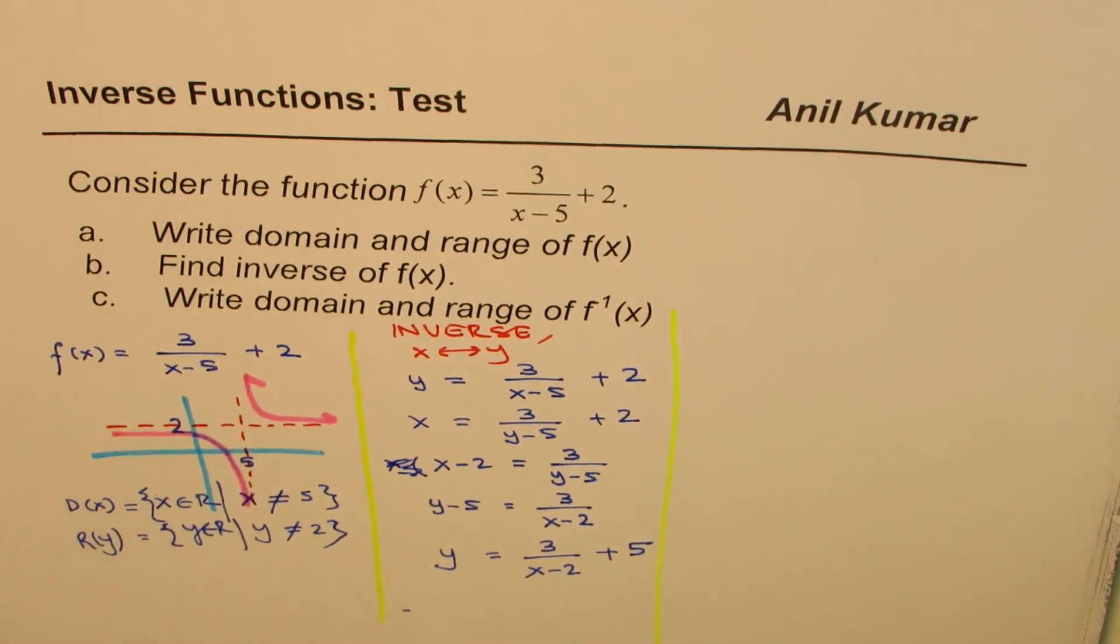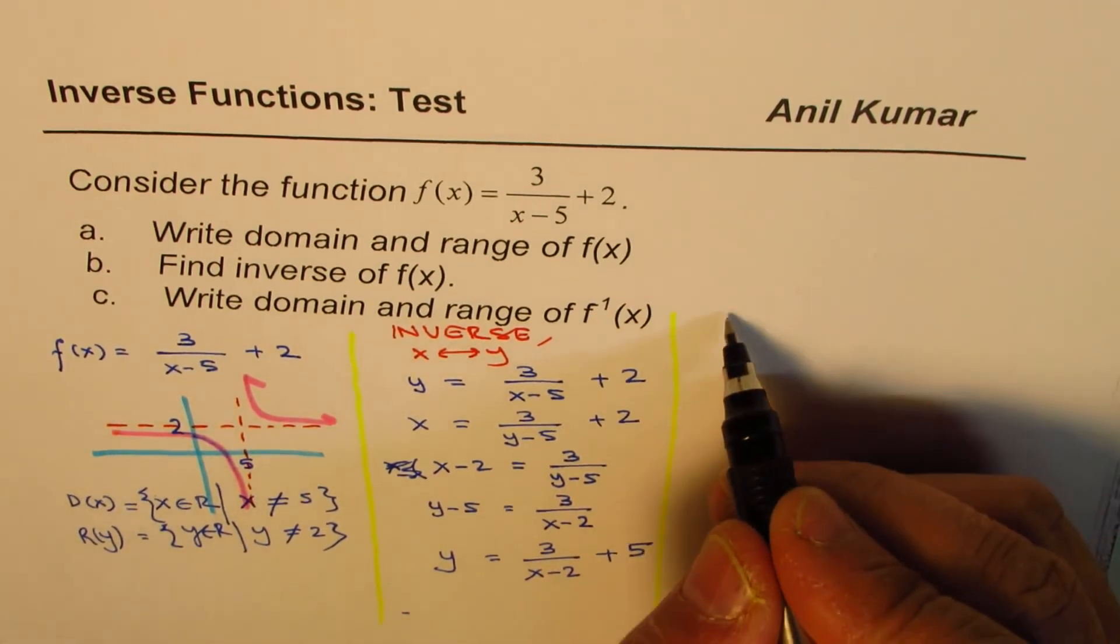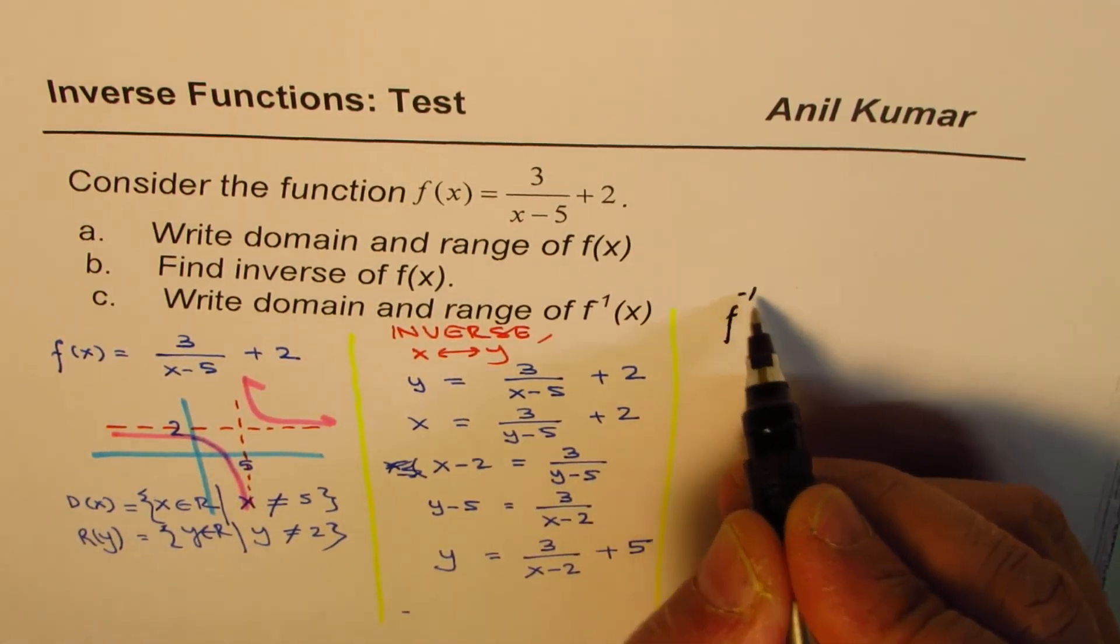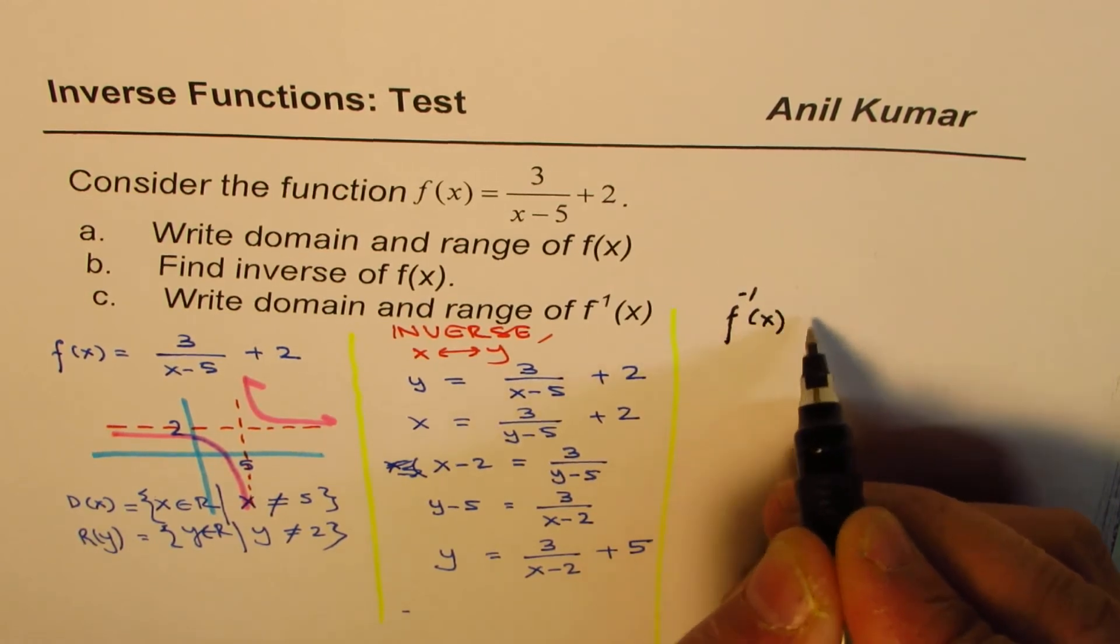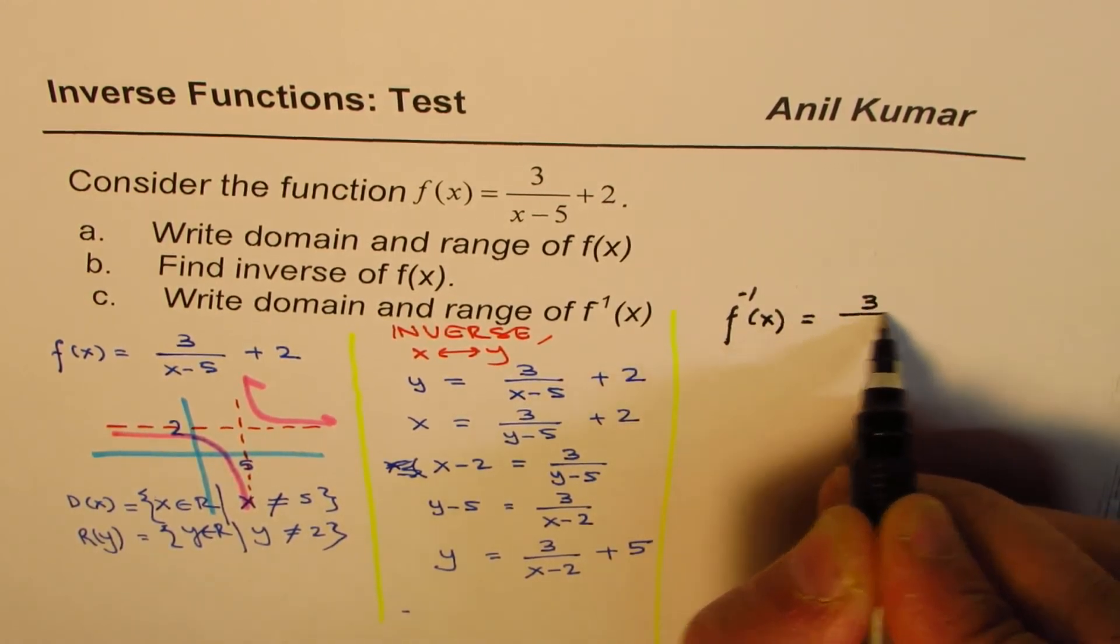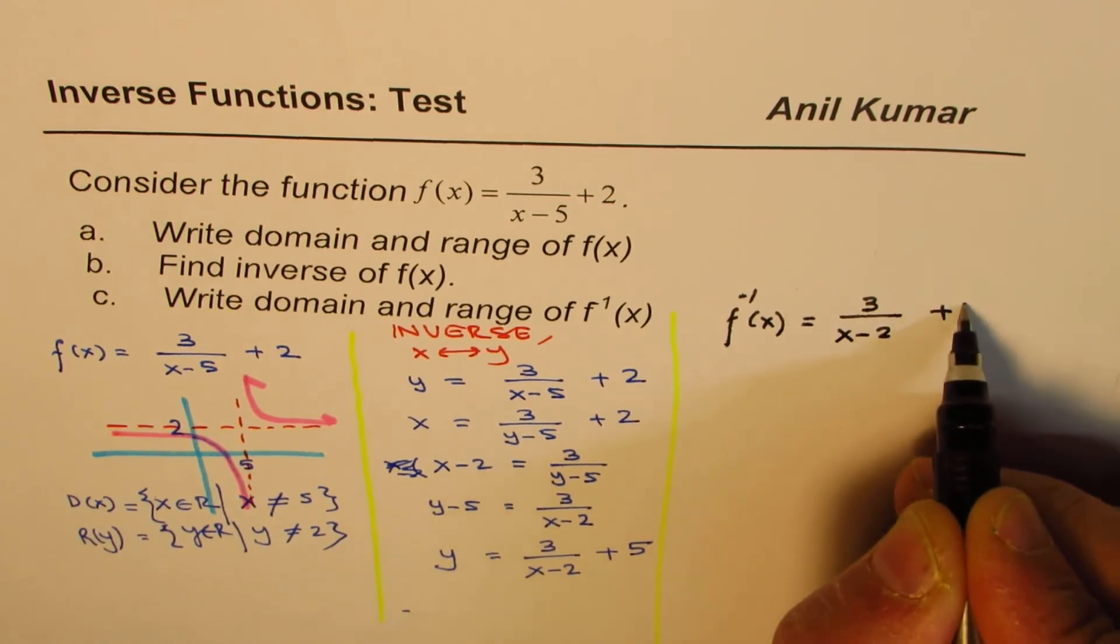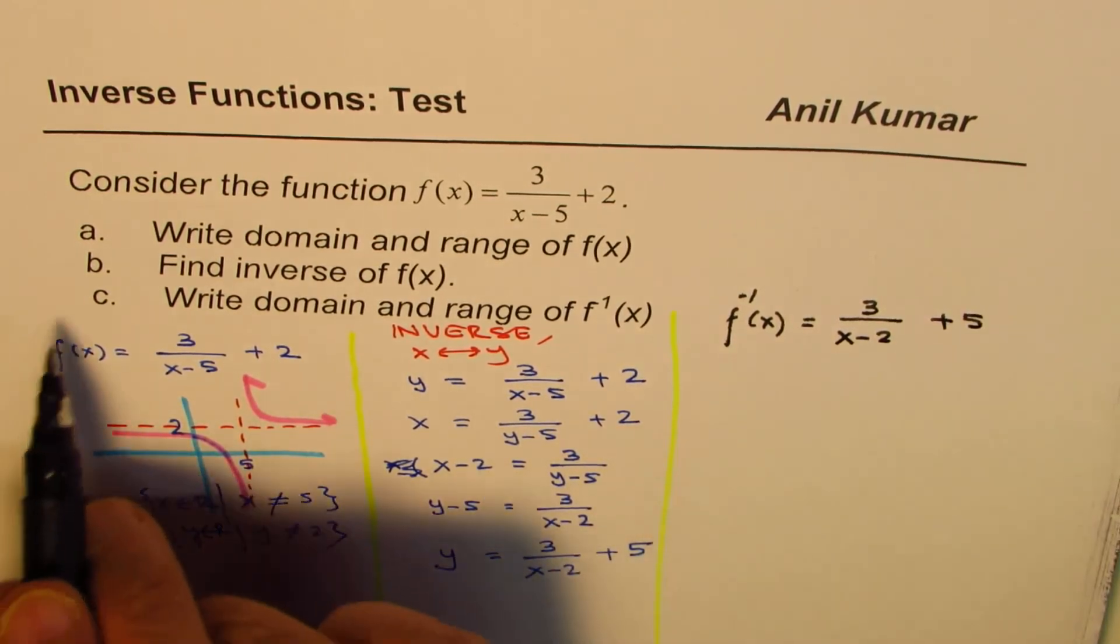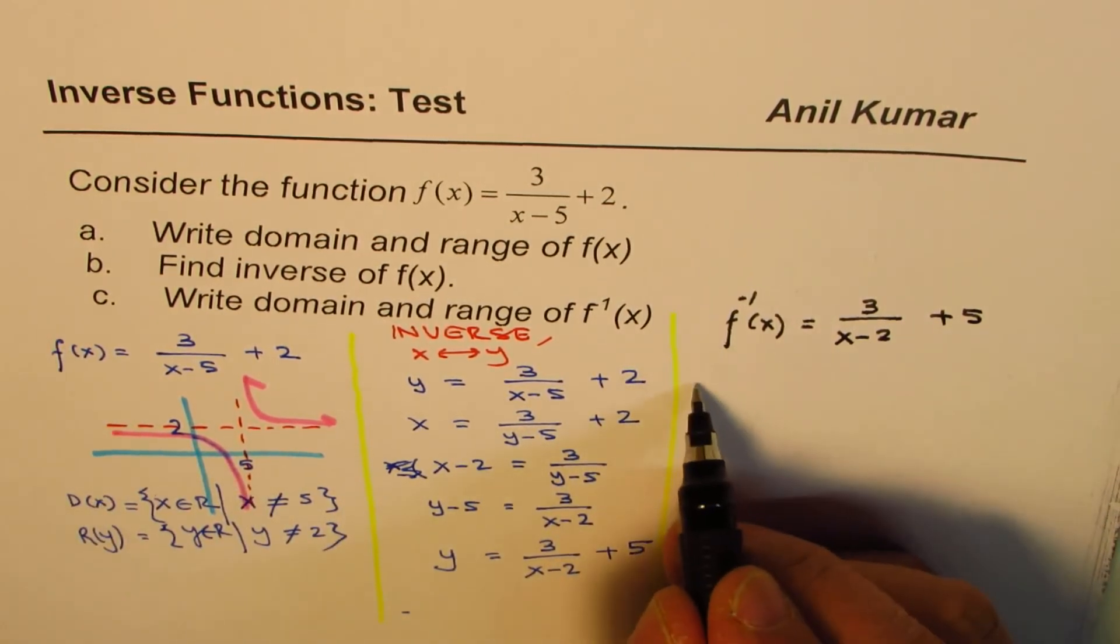So from here, we can write down what the inverse of this function is. So the inverse of this function is, we can say f inverse of x is equals to 3 over x minus 2 plus 5. And now, we'll do part c, which is writing domain and range.